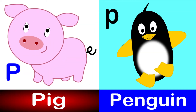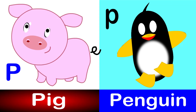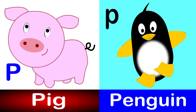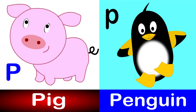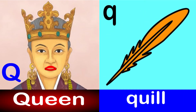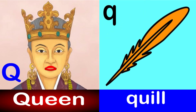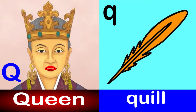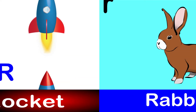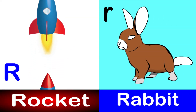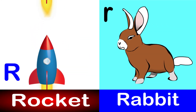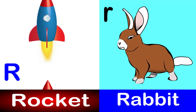P for pig, P for penguin. Tick tick tick, tick a tick a tick. Q for queen. Ding ding ding, ding a ding a ding. R for rocket, R for rabbit. Tick tick tick, tick a tick a tick.